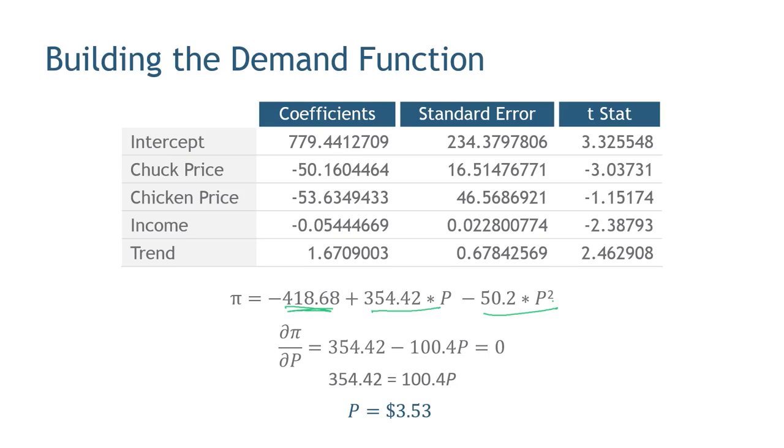What are we going to do? Optimization. What does that mean? Take the derivative of the profit function with respect to price, set that equal to zero, and solve for P. And when you do that, you get P equals $3.53.